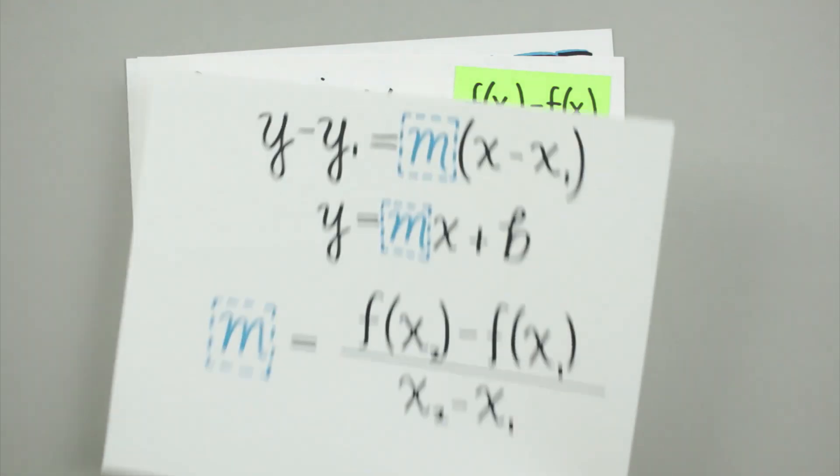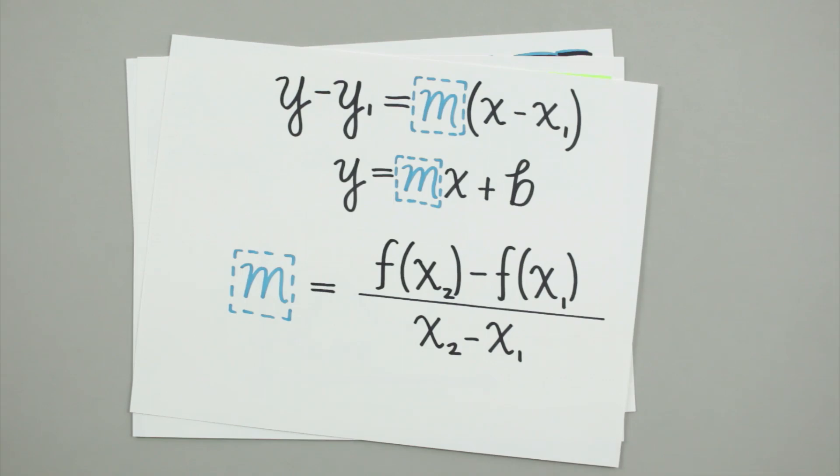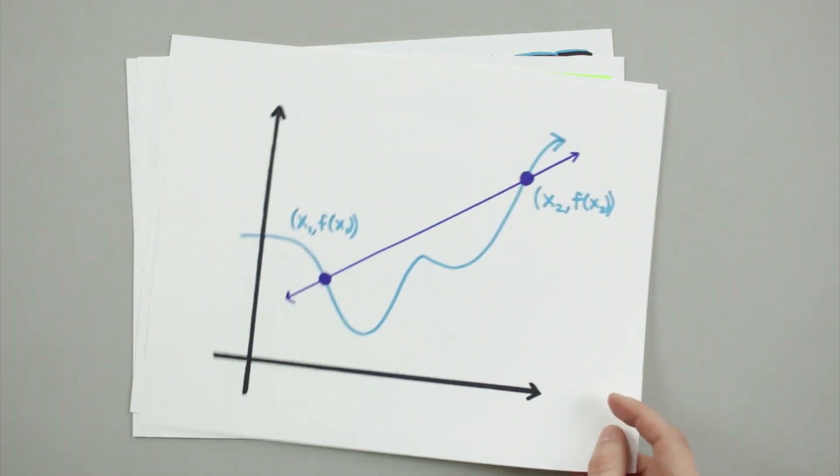If you spent any time studying linear equations, you'll probably recognize that this formula for average rate of change is exactly the same as the equation you use to find the slope of a line. More specifically, the formula for the average rate of change calculates the slope of the secant line between two points on the graph of a function.